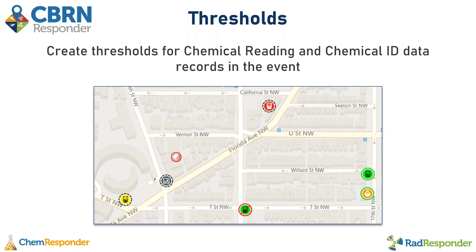When I'm talking about thresholds, I'm talking about ways of indicating the severity of a reading on the event map. Chemical readings that have been uploaded in the event are colorized according to their severity — a red marker means something is exceeding the high severity threshold, a yellow one has exceeded the medium threshold, and so on.